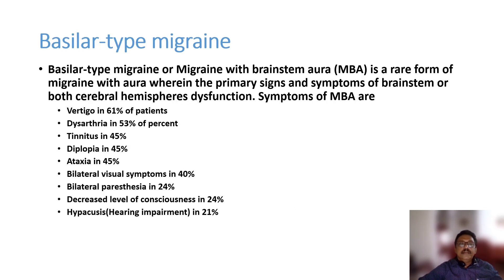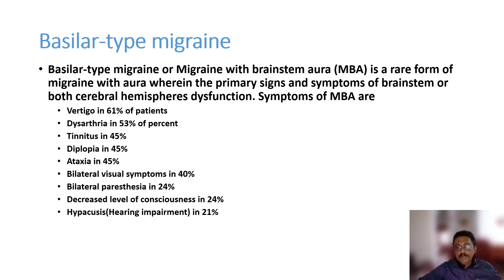Basilar migraine, or migraine with brainstem aura, is rare. Symptoms include vertigo, dysarthria, tinnitus, diplopia, ataxia, bilateral visual symptoms, bilateral paresthesia, decreased consciousness, and hearing impairment — closely mimicking posterior circulation stroke. Detailed history is crucial; MRI is required for first-time presentations to rule out posterior circulation stroke.